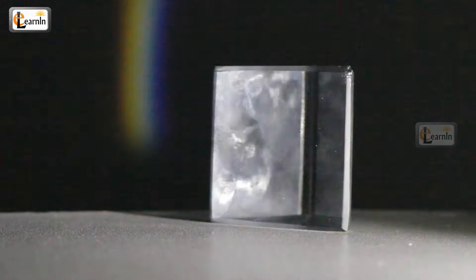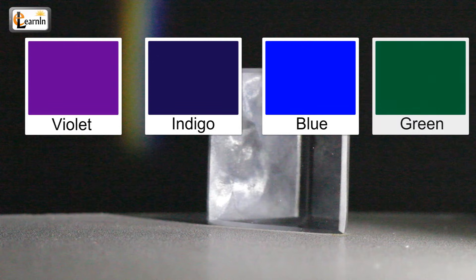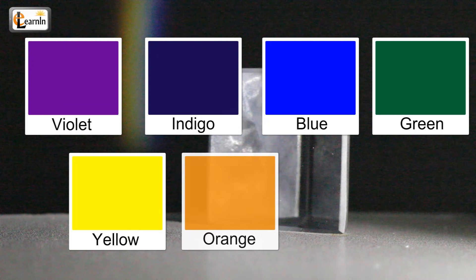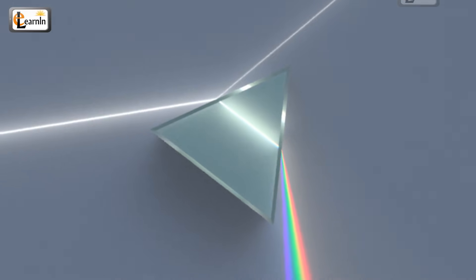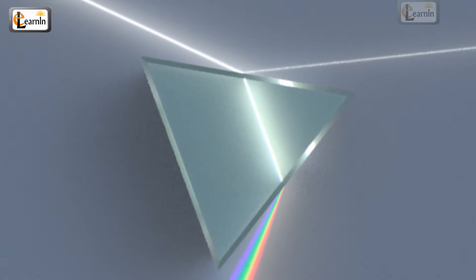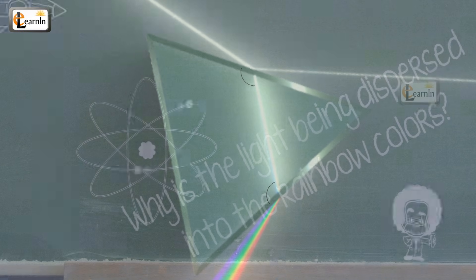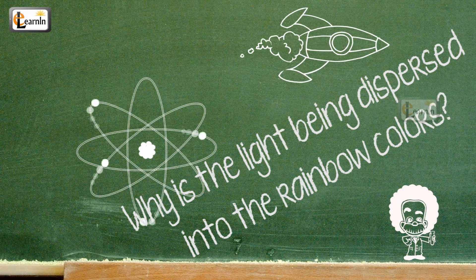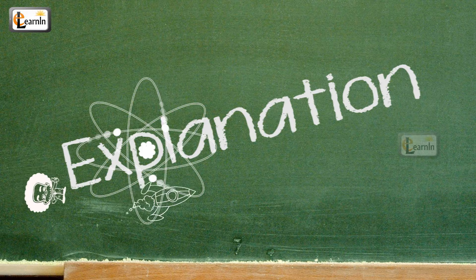When light travels through the prism, it splits the white light into seven colors: violet, indigo, blue, green, yellow, orange, and red. They appear in the same order just like in the rainbow. Observe the light ray carefully inside the prism — notice that it bends at two different points: once when entering the prism, and again when it leaves. The question is: why is the light being dispersed into rainbow colors?